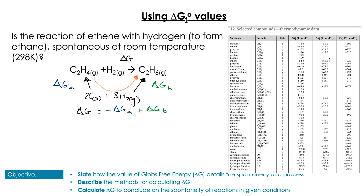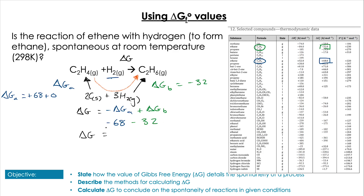We identify the formulae in the equation, look up the values in the fifth column of the table, and write the values: ΔG_A equals +68 plus 0, and ΔG_B equals −32. Plugging those in gives −68 minus 32, which equals an overall value of −100 kilojoules per mole. This is exactly the same as using the ΔH − TΔS equation, which is expected since we haven't used average values and we've worked at standard temperature. This method only works at standard temperature, as the Gibbs formation values in table 12 are only valid at standard conditions.